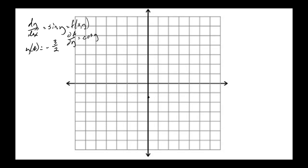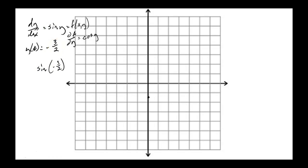Let's plug in what we know. When x equals 0, y equals minus three-halves, we can calculate the derivative there by doing sine of negative three-halves — that's your slope at that point. I just happen to have my calculator — my phone — with me today.